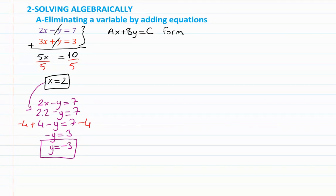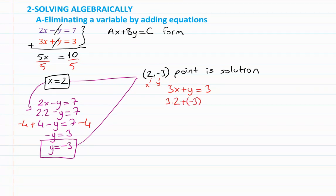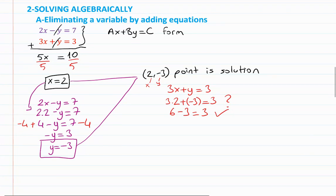We can check by putting this solution in the red equation 3x plus y equals 3. Substituting x equals 2 and y equals negative 3: 3 times 2 plus negative 3 is 6 minus 3 equals 3. It's satisfied, confirming (2, -3) is our solution.